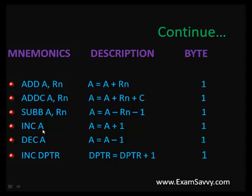Increment A increments the accumulator by 1 and stores the result in the accumulator; the size is 1-byte. Decrement A performs decrement by minus 1 and stores the result in A; size is also 1-byte. In 8051, only increment DPTR is possible — decrement is not possible. We add DPTR with plus 1 and the result is available in DPTR. It is a 16-bit register but the instruction size is 1-byte.